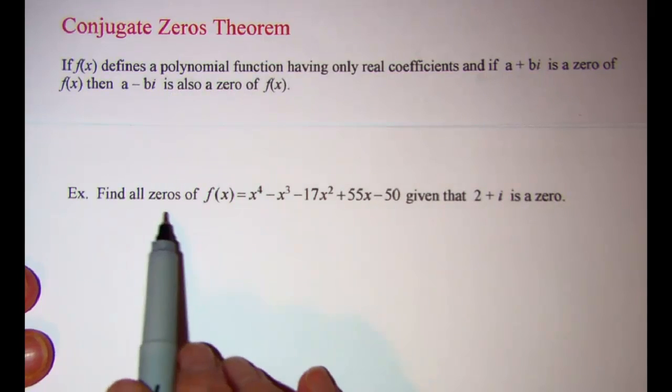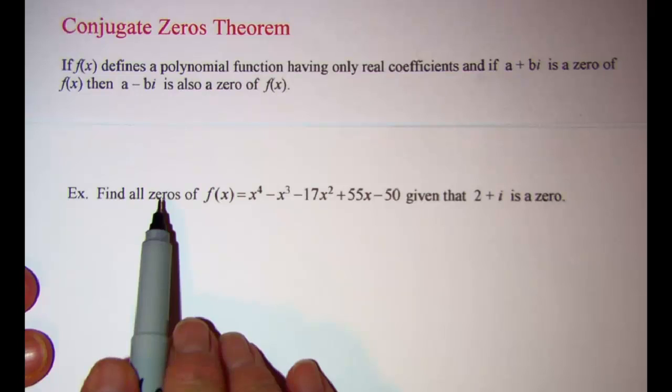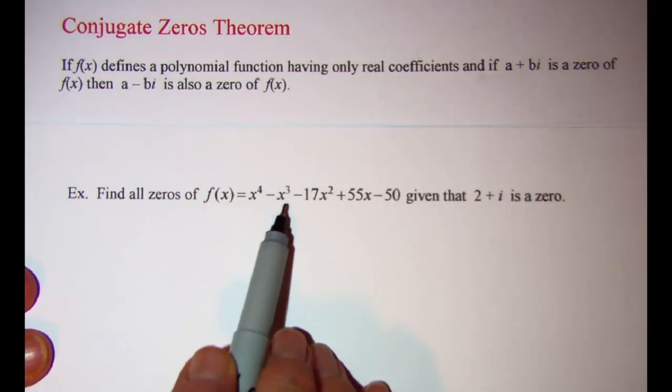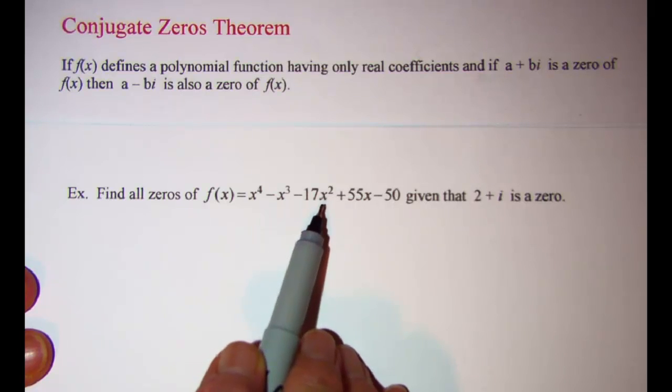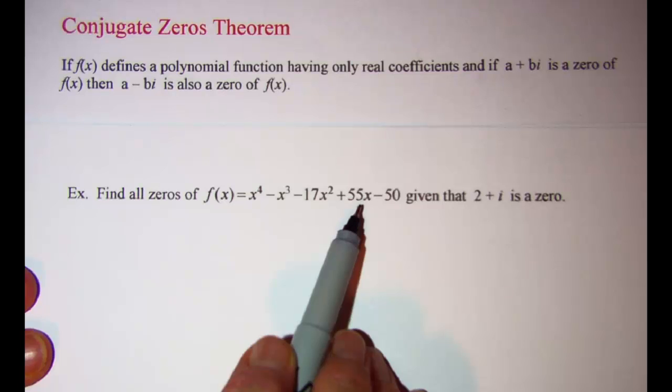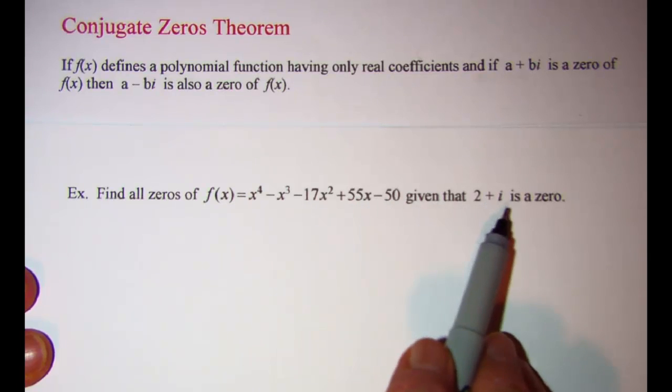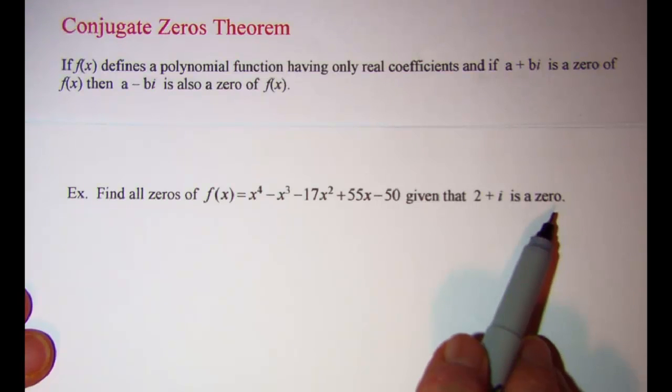The example that we'll be doing is we're asked to find all the zeros of f(x) = x^4 - x^3 - 17x^2 + 55x - 50 given that 2 + i is a zero.